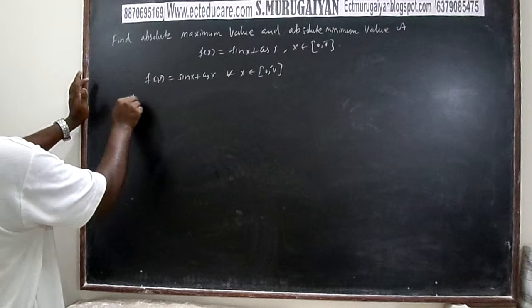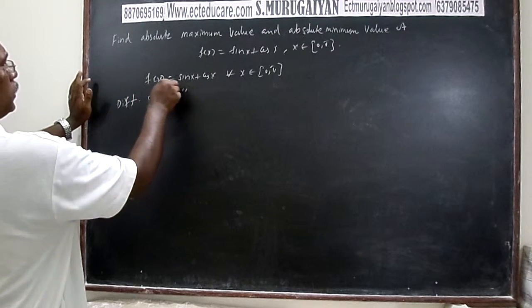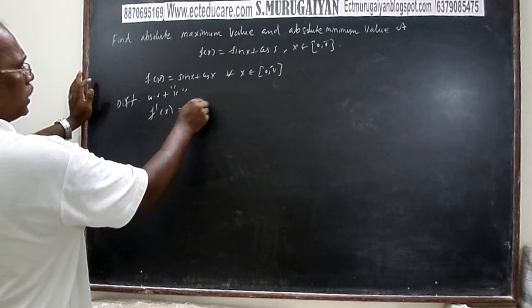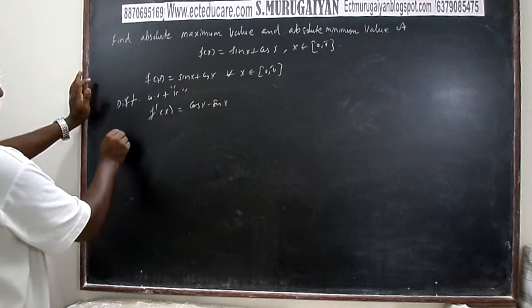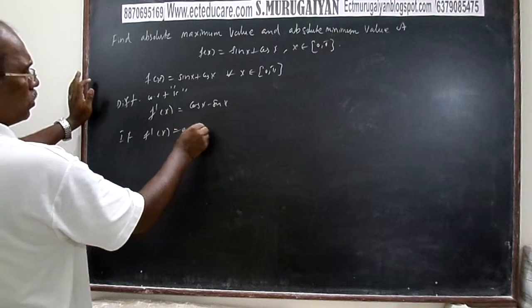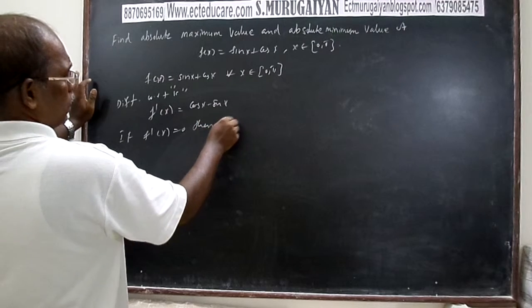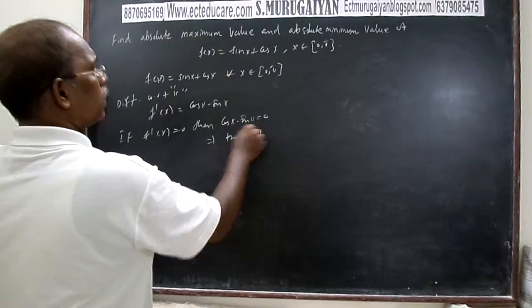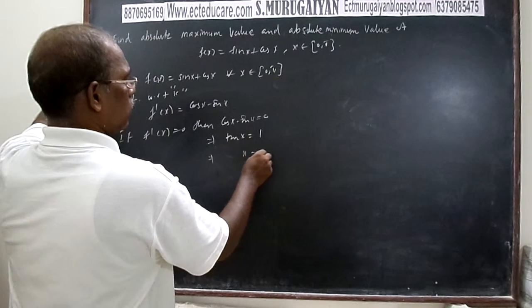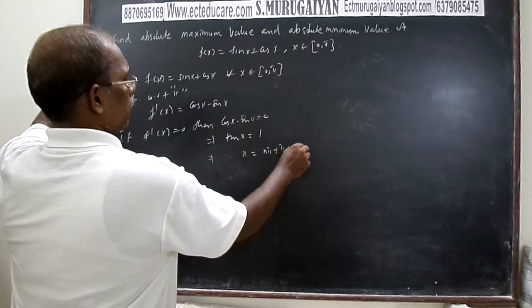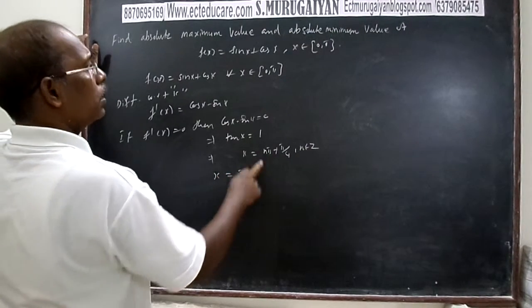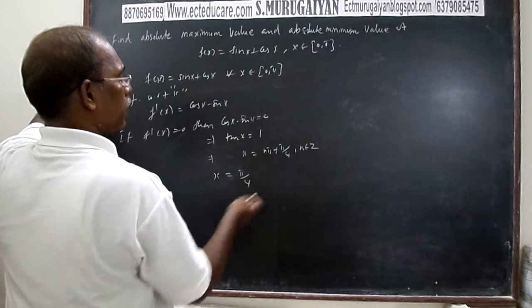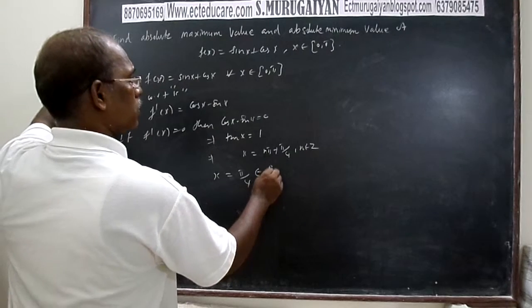Differentiating with respect to x, we get f'(x) = cos x - sin x. If f'(x) = 0, then cos x - sin x = 0, which gives tan x = 1. This means x = nπ + π/4, where n belongs to integers. For n=0, x = π/4. For n=1, x = 5π/4, which is outside [0, π]. So there is only one critical value in the closed interval [0, π], which is x = π/4.